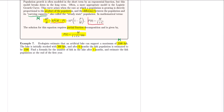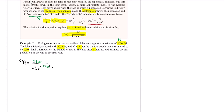Since this problem gives us the carrying capacity and we know we're dealing with logistic growth, the population is modeled by P(t) = 2,500 divided by 1 plus C times e to the negative M·k·t. We need to figure out the K and C values, so let's use the information the problem gives us. We know P₀ is given by M divided by 1 plus C.